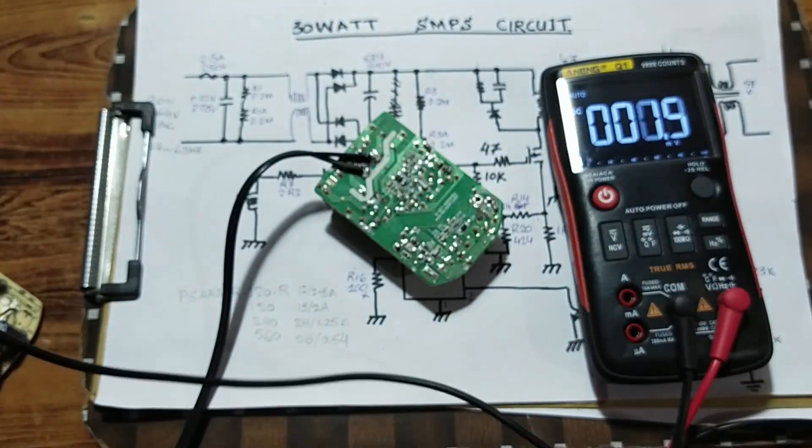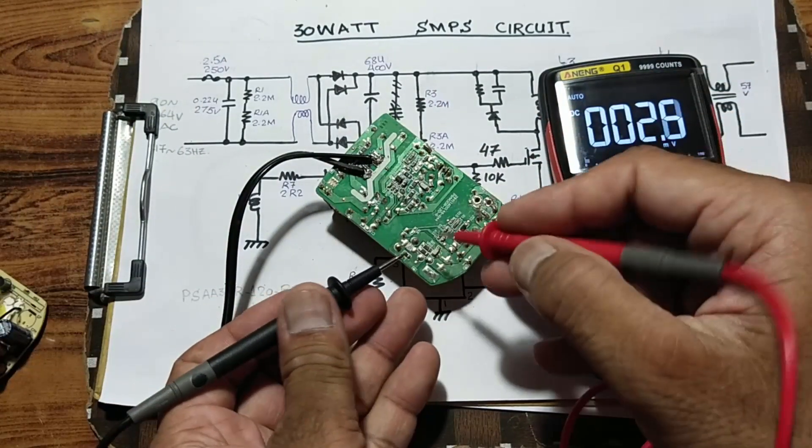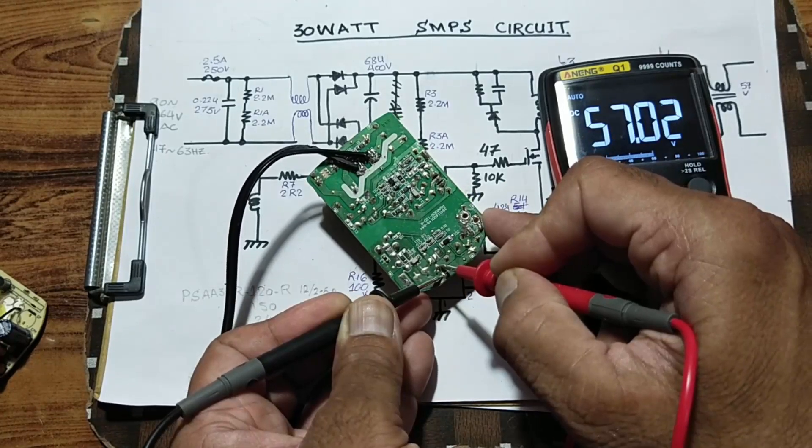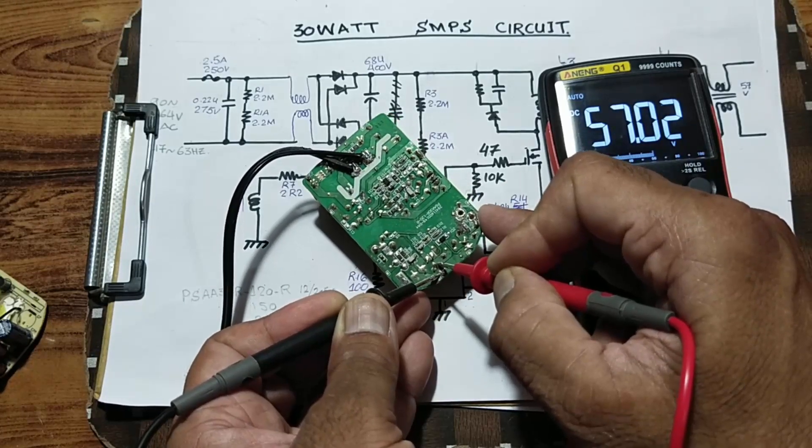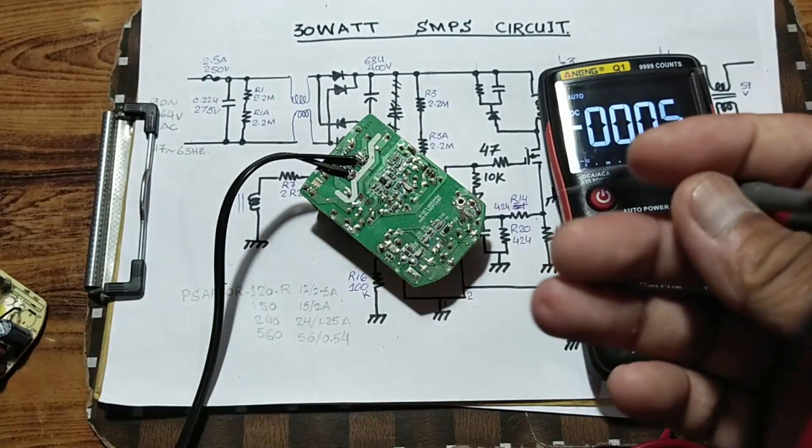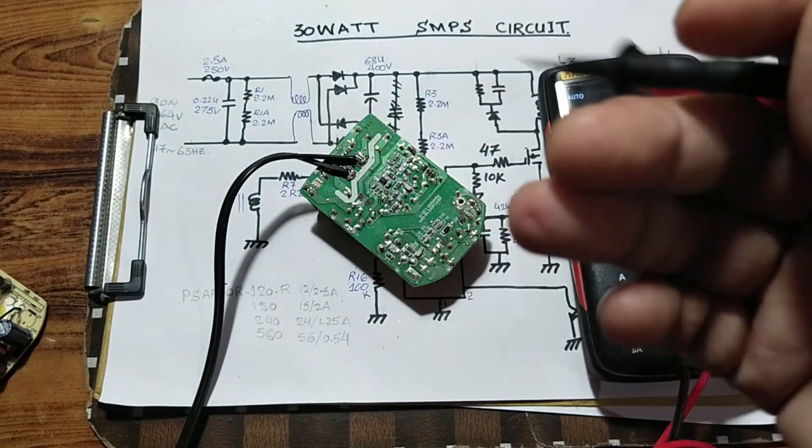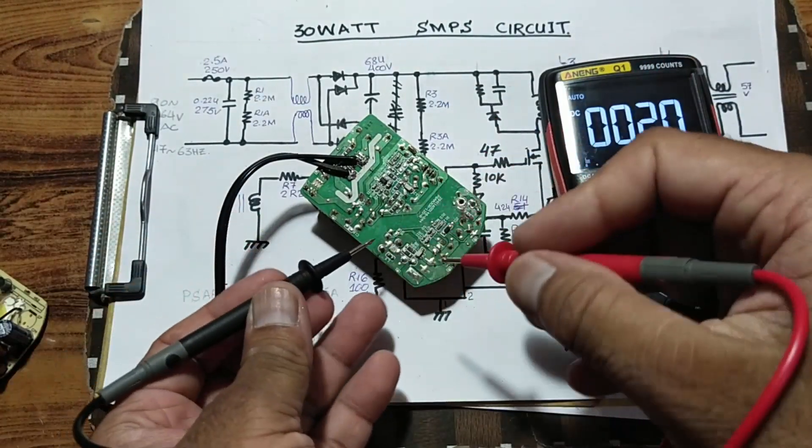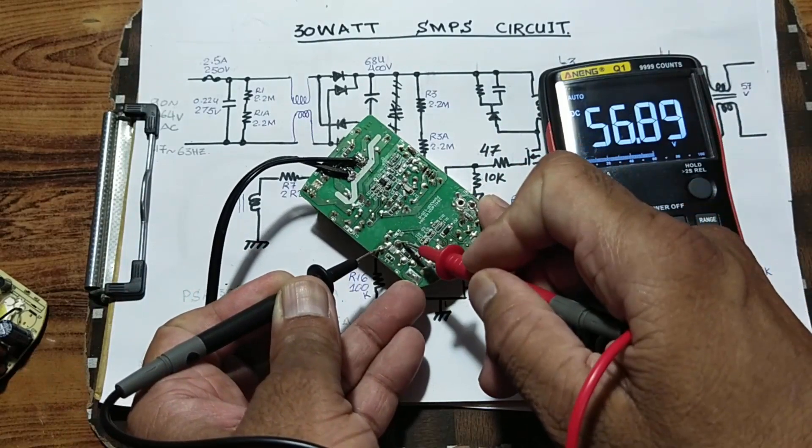If we want to test the output of transformer, we have to check DC voltage across this diode. And it is exact output, the output of the circuit, it is 57 volt DC voltage across the diode. Whether we have computer power supply or any type of power supply, we can check the voltage across this diode in forward bias.